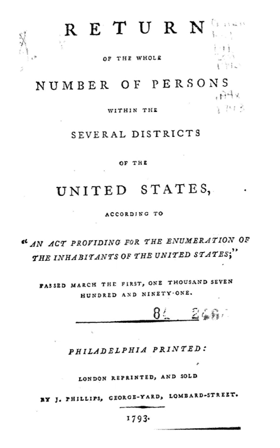The 1970 Census included 'Negro or Black,' re-added Korean and the other race option. 'East Indians' — the term used at that time for people whose ancestry is from the Indian subcontinent — were counted as white. There was also a questionnaire asked of only a sample of respondents, covering birthplace, Hispanic origin or descent, parents' birthplaces, naturalization status, year of arrival in the U.S., and language spoken at home as a child.